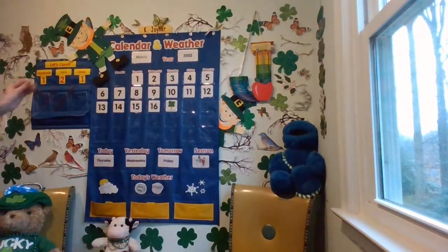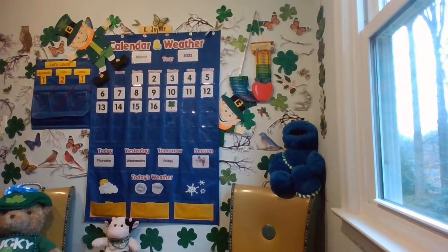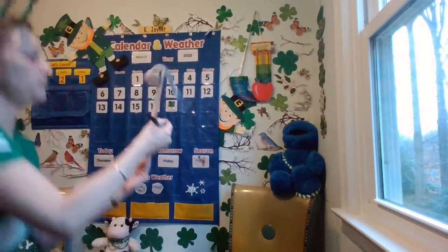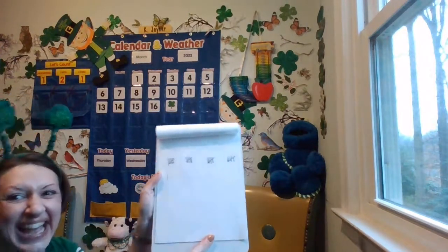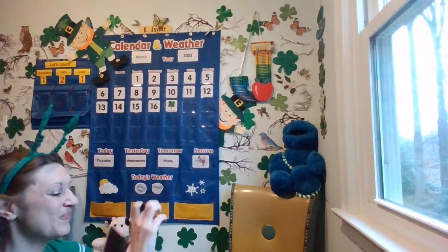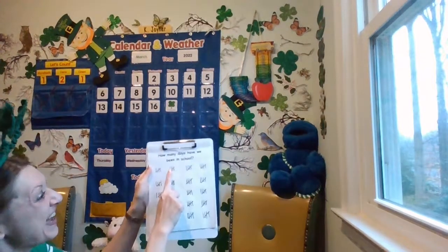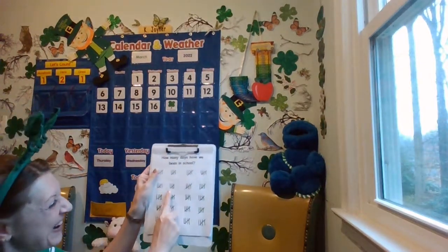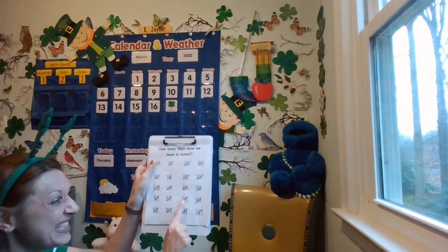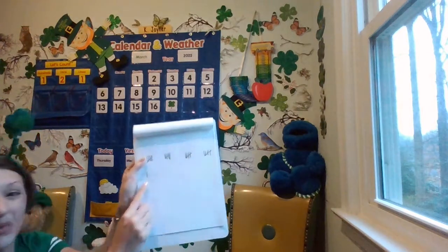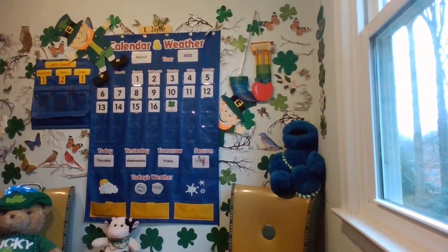Now let's quickly do a tally mark and figure out how many days we've been in school. Let's pull straight down and skip count by fives 24 times and put the one with it. Ready? 5, 10, 15, 20, 25, 30, 35, 40, 45, 50, 55, 60, 65, 70, 75, 80, 85, 90, 95, 100... and on to 121. So many days learning together in kindergarten!